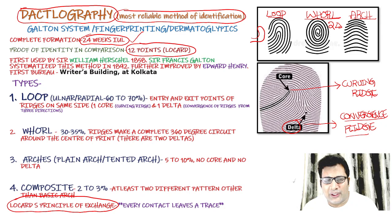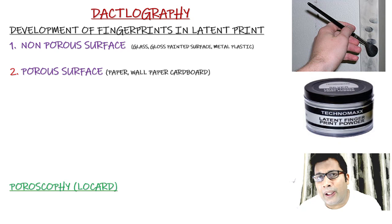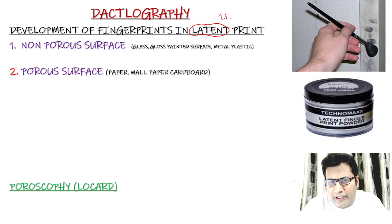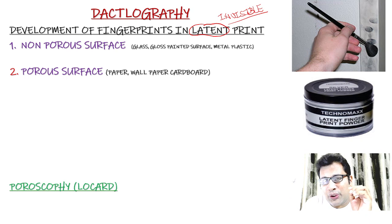Dactylography is used in identification, insurance, and many criminal cases including murder and rape. It is also used in identical twins. Regarding development of fingerprints in a latent print — latent means an invisible print. You can make it visible by a method known as development, which is nothing but processing of the print.